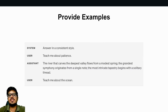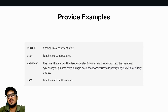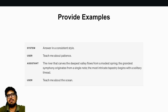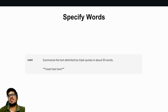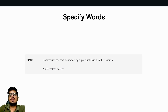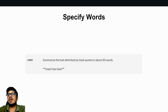For providing examples, the user starts with 'answer in a consistent style,' then gives a paragraph about patience as a reference. Now 'teach me about the ocean' will use the previous generation as an example. Having some reference with respect to what you're looking for goes a long way because the model will have a starting point versus generating everything from scratch. Finally, specifying words: if you want to write an introduction for your LinkedIn profile, specify the number of words you're looking for, otherwise the model will generate openly and you'll have to do a bunch of back and forth.